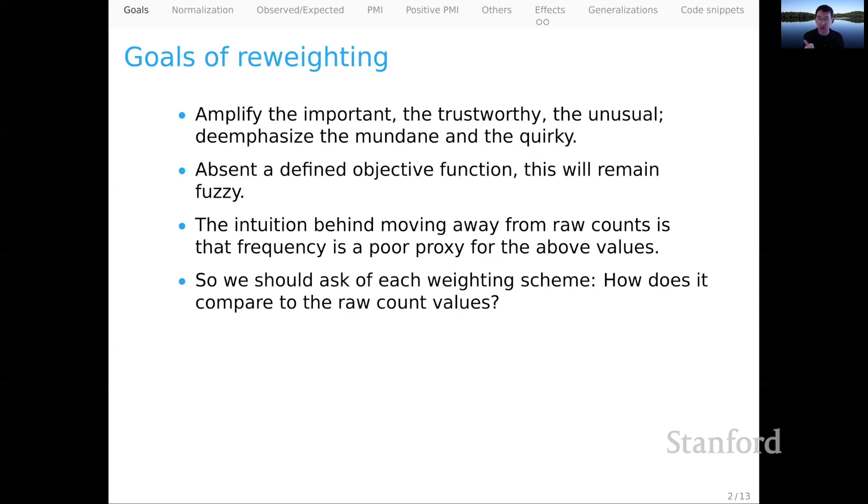So we can ask for each of the reweighting schemes that we consider: How does it compare to the underlying raw count values? If the scheme is just rescaling the underlying counts, it's probably not worth the effort. On the other hand, if it gives us a very different distribution, then at least we know that we're cooking with fire when it comes to moving away from raw frequency. There's a related question: What is the overall distribution of values that the reweighting scheme delivers? Count distributions are very skewed in a way that can make them difficult to deal with for lots of analytic and machine learning methods. So we might hope that in reweighting, in addition to capturing things that are important and deemphasizing things that are mundane, we'd also give us an overall distribution of values that was more tractable for these downstream applications.